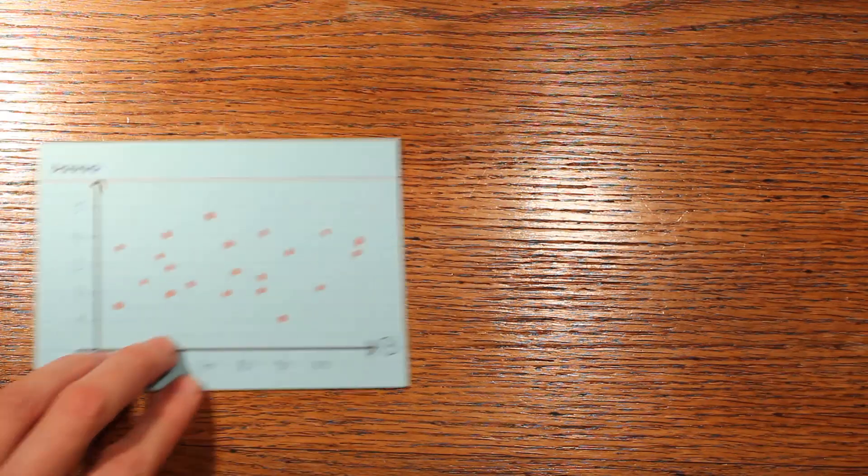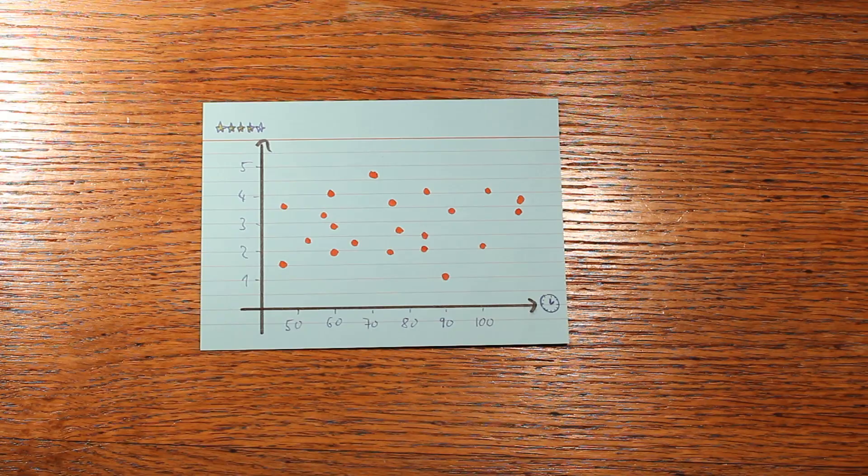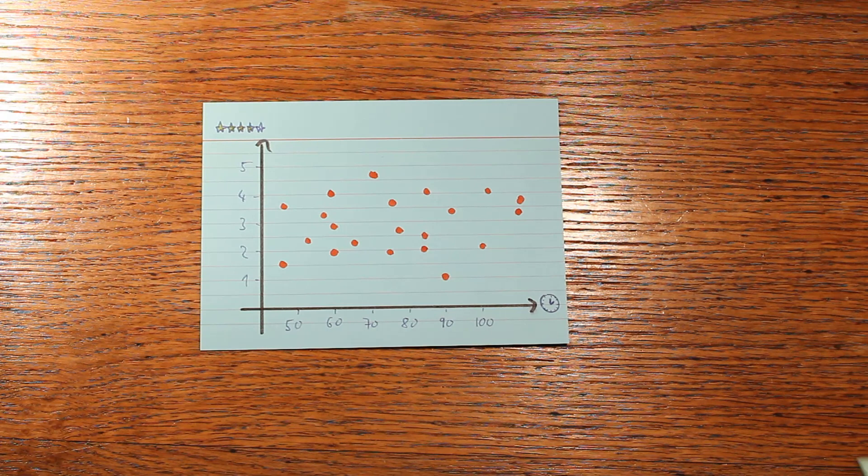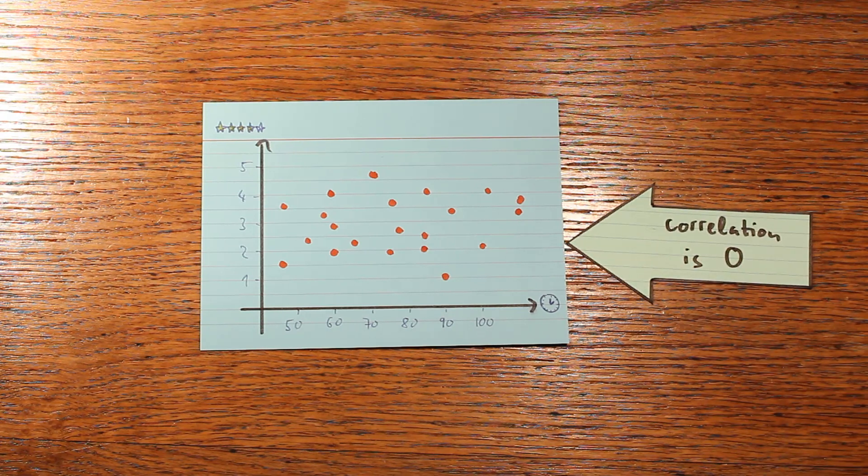But then there's a third case, and that's that the trend is exactly level. So in this dataset you can see that the rating doesn't really seem to change with the movie's length. So then the correlation coefficient is 0.